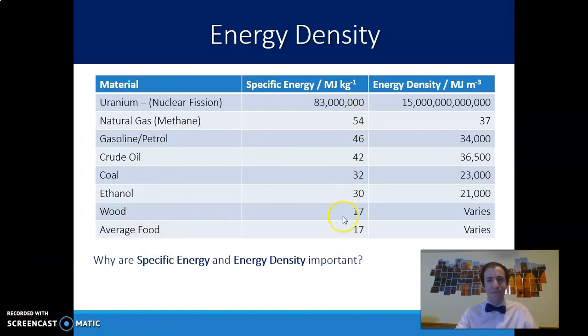Specific energy, megajoules per kilogram, are shown here. And energy density, megajoules per cubic meter, are shown here. Mega, just remember, is a million. So a megajoule is a million joules. 54 megajoules of energy is 54 million joules of energy. That means this is 83 million million joules when we're talking about uranium.